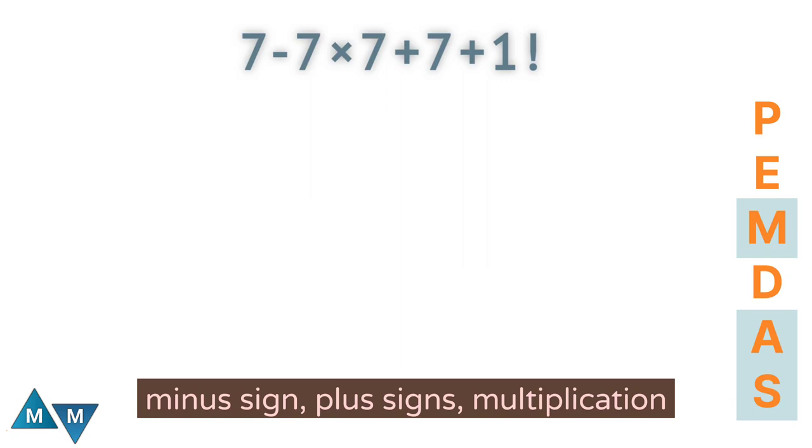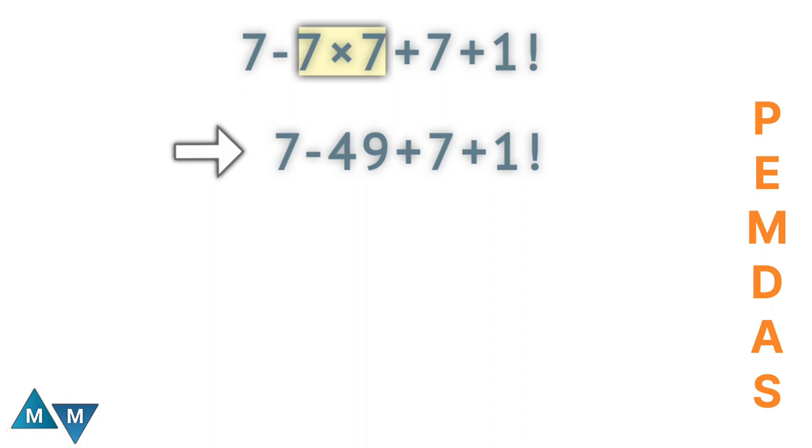So 7 times 7 will be our first move, which is equal to 49. Now the expression becomes 7 minus 49 plus 7 plus 1 factorial.